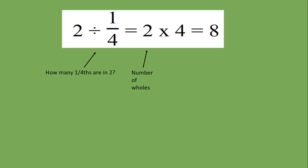And so this two represents the number of wholes that we have and we're multiplying that by four, which is the reciprocal, which tells me the number of fourths in each whole. When I multiply those two, I get eight and that tells me there are eight fourths in two.